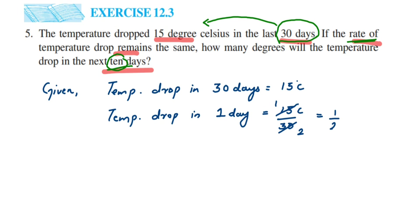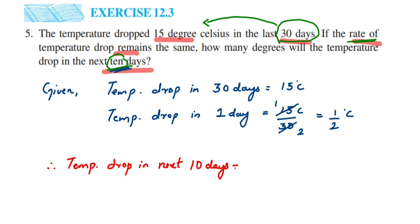So 0.5 degrees Celsius is dropping every day. Now we can find the drop for the next 10 days. Instead of adding half repeatedly, we multiply: temperature drop in next 10 days equals half degree Celsius multiplied by 10. Cancelling 2 and 10 gives 1 and 5, so we get 5 degrees Celsius. In the next 10 days, the temperature will drop 5 degrees Celsius.